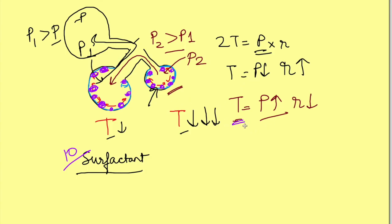So the surface tension in the smaller alveolus will be much lesser, and therefore the pressure generated will also not be as high. The smaller the alveolus, the greater the effect of surfactant on tension, and hence the greater the reduction in pressure generated. This is how surfactant prevents the collapse of smaller alveoli into larger ones. Thanks for watching — that's all for Laplace law in alveoli.